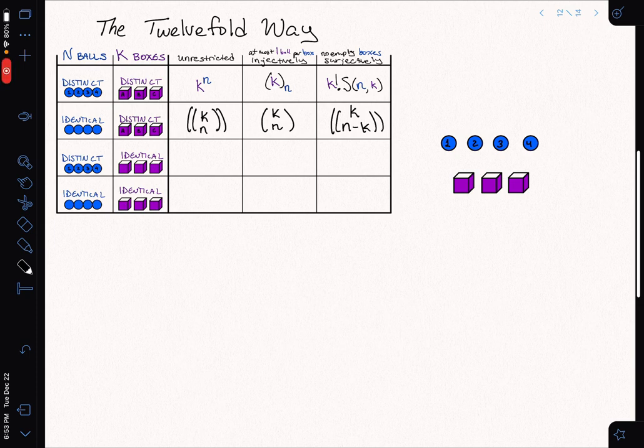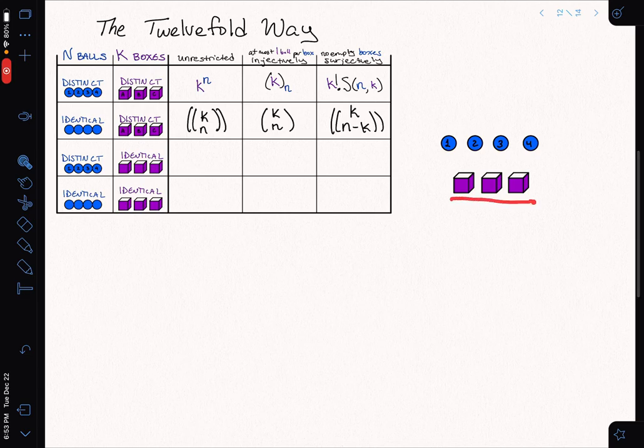Now we're going to finish up the 12-fold way by considering the case where all of our boxes are identical. In this case, I can think of all that I'm doing is I'm taking the balls that I have and I'm partitioning them into these blocks. Some of these blocks in the unrestricted case might be empty.